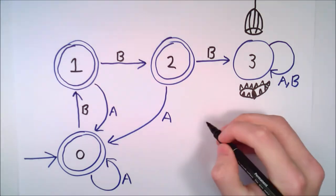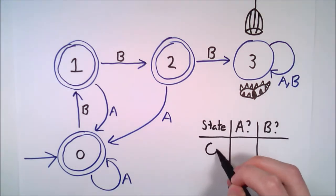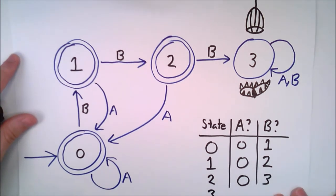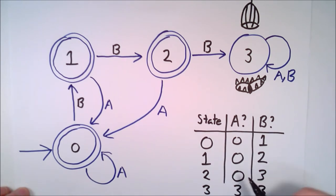So have we finished? Let's check. State 0 has an A transition and a B transition. State 1 has an A transition and a B transition. State 2 has an A transition and a B transition. And State 3 has an A transition and a B transition.